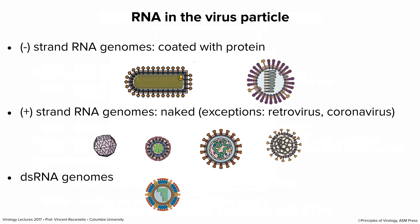Let's look at the situation with RNA in the virus particle. Negative-strand RNA genomes are always coated with protein — for VSV the RNA is present in an RNA-protein complex, the ribonucleoprotein nucleocapsid. Influenza virus is the same, except the genome is segmented. Because the negative strand, if it were naked in the particle, would be unable to do anything when it enters the cell. So the virus has to bring in a polymerase within the particle with those negative-strand RNA viruses.